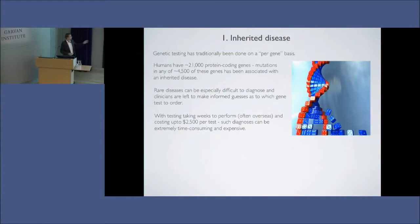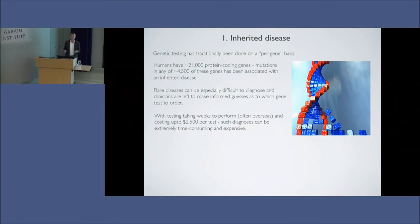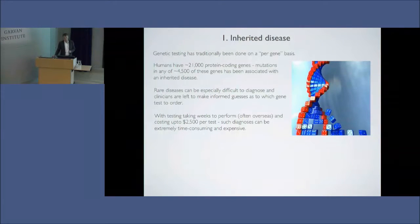One of the other main problems with genetic disease was that you'd be doing one test at a time. A geneticist would take a guess — maybe it's this disease — and order a test. Three months later, six months later, they get it back: negative. Try the next one. Another three months. Another six months. And so on. It could take years, sometimes a decade, and tens of thousands of dollars to just diagnose one disease. I think those days really are over.